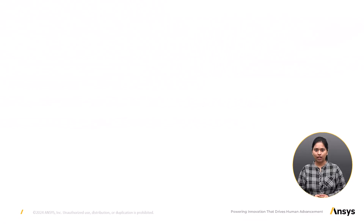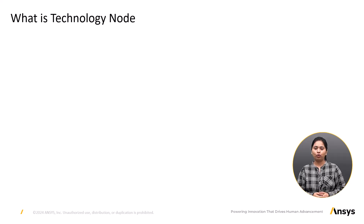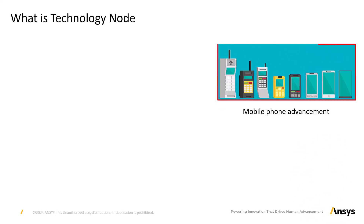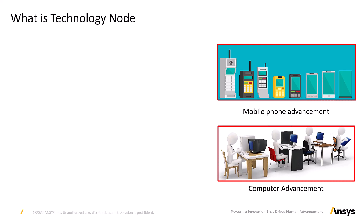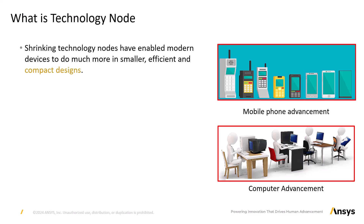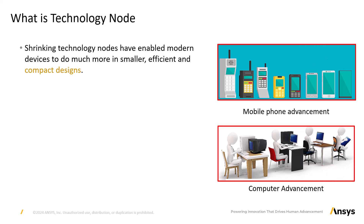Let us now understand what a process node or technology node, which is measured in nanometers, means and why it is important. Devices and gadgets have evolved significantly — we have moved from simple to smart. The shrinking of technology nodes has enabled modern devices to do much more in smaller, efficient, and compact designs. Electronic devices are made of processors which consist of tiny nanoscopic transistors that control the flow of current and perform logical functions.